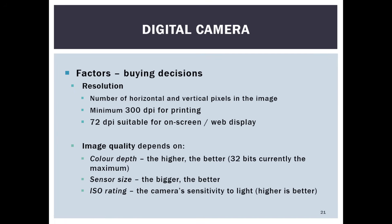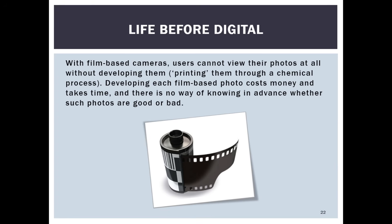Before digital cameras, film was used in old cameras and you could not view the photos until they were developed. In dark rooms, photos were developed in a chemical solution under red light. You would take photos and hope they came out decently — you had no way to preview them beforehand.